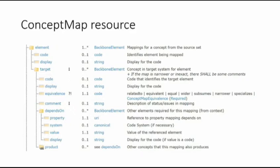There's a resource in the FHIR spec called ConceptMap. It's described in the terminology section and its principal use is for mapping between terminologies. Terminologies, from a UML perspective, describe a set of concepts where each concept is a class that has only one instance. You might map, for instance, between a LOINC subset and a SNOMED CT subset — that would be a typical use.